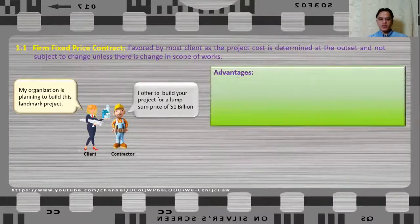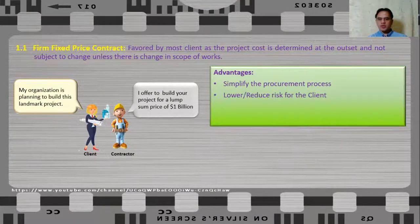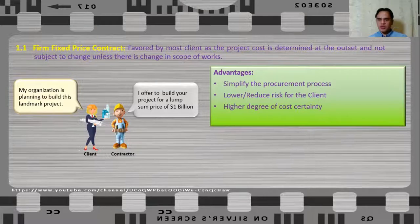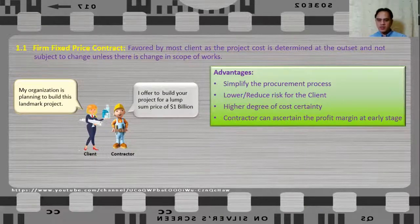The advantages of firm fixed price contract are: first, it simplifies the procurement process; it also lowers or reduces the risk of the client; and there is a higher degree of cost certainty because the client already knows the total project cost at the outset. Also, the contractor can ascertain the profit margin at the early stage, provided the contractor will complete the project as planned.